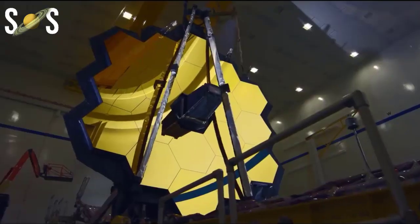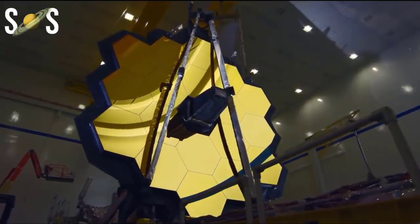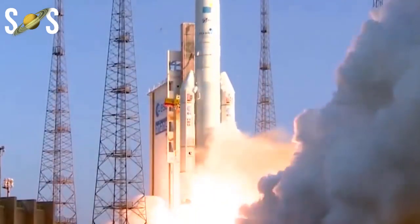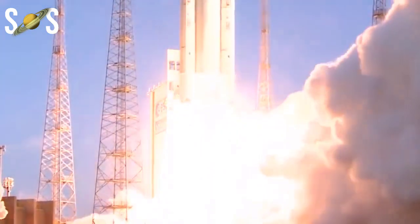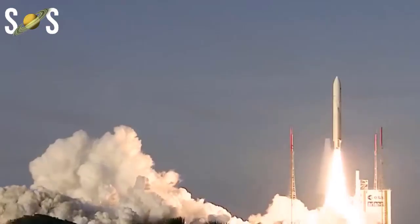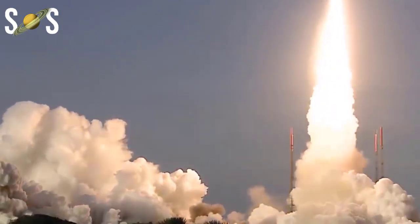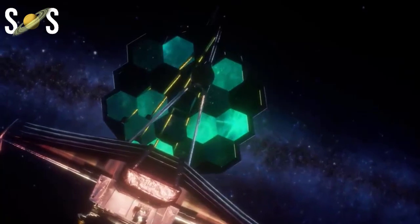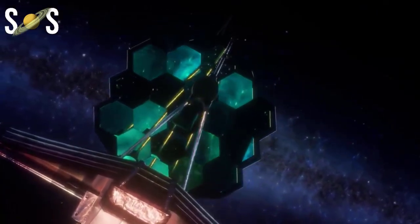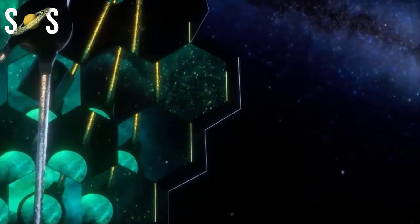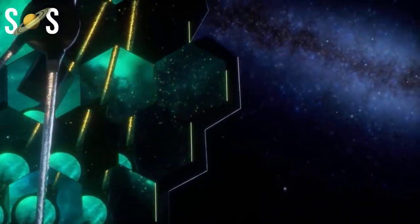After several launch delays, the Webb Space Telescope is currently scheduled to launch no earlier than 7:20 AM on Saturday, December 25, from the Guyana Space Center in Kuru. What time does JWST launch? On Saturday, December 25, between 7:20 AM and 7:52 AM Eastern time zone, a shiny new observatory called the James Webb Space Telescope, JWST, is scheduled to ride a rocket launching from South America.